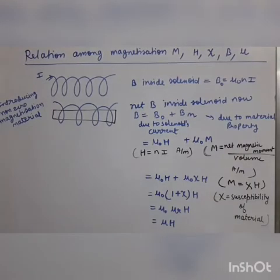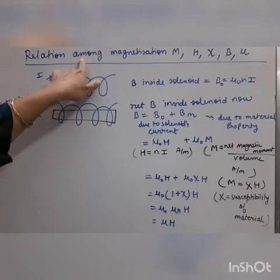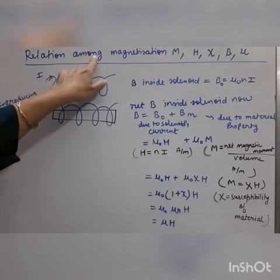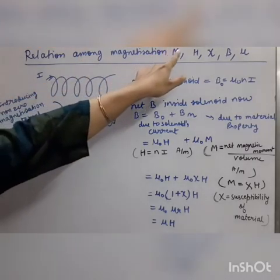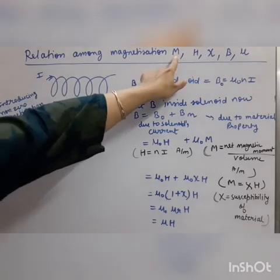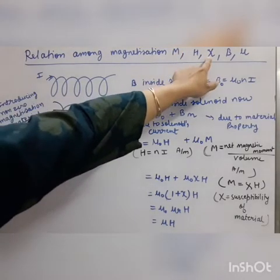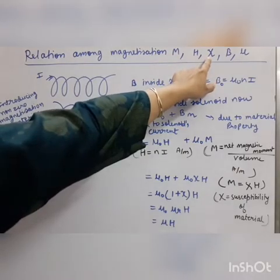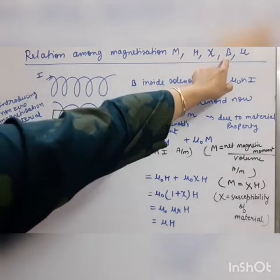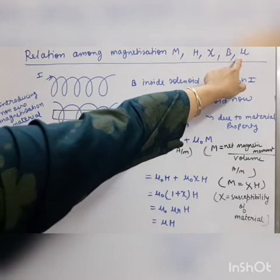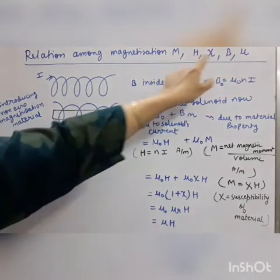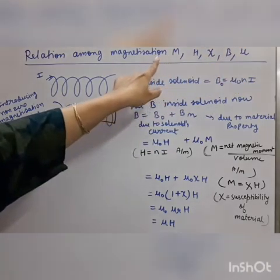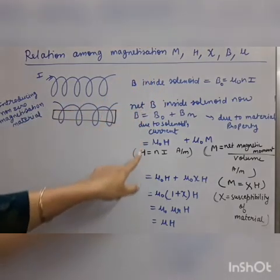Hello students, today we are understanding the last heading in magnetization — that is the relation among different magnetization terms: capital M, capital H, chi (susceptibility), magnetic field B, and mu (permeability). We need to understand how these terms are interconnected with each other, and for that we will go through this example.